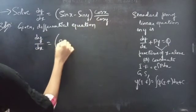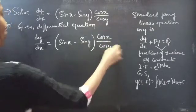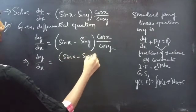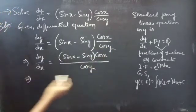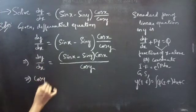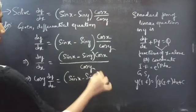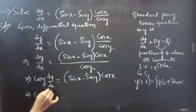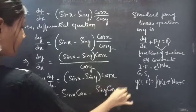The given differential equation is dy/dx equals sine x minus sine y into cos x by cos y. Now bring cos y to the LHS — you'll get cos y into dy/dx equals sine x minus sine y into cos x. Now multiply these two terms with cos x, then you'll get cos y into dy/dx equals sine x cos y minus sine y cos x.